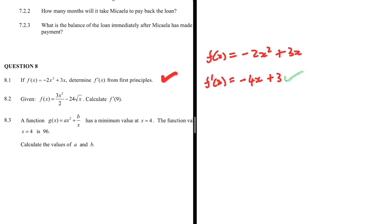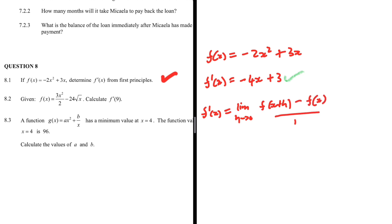If we use first principles and don't get the same answer, we know there is a mistake somewhere along our steps. So let's go ahead and do it using first principles. We know that f prime of x equals the limit as h tends to zero of [f(x+h) − f(x)] divided by h.